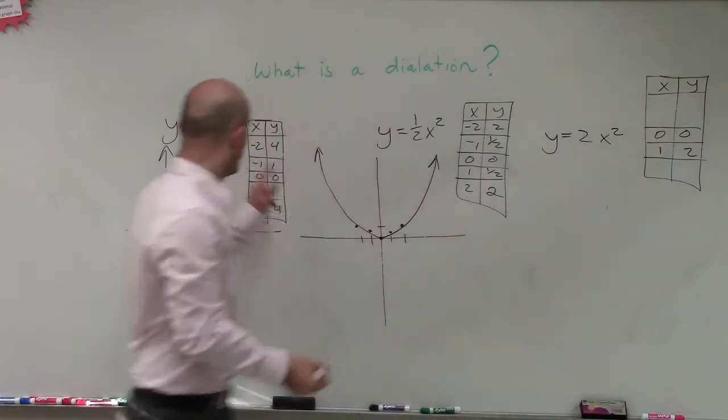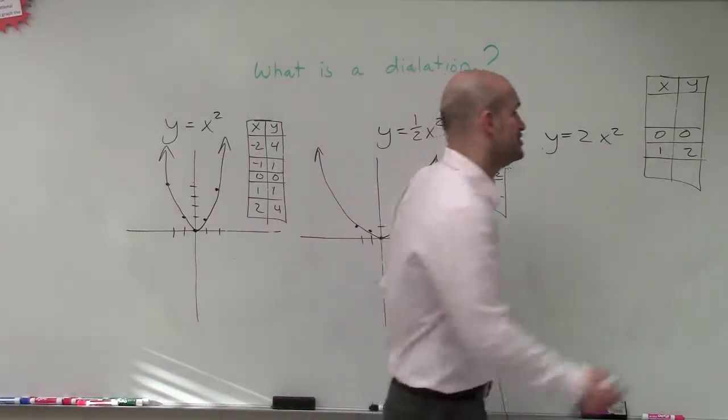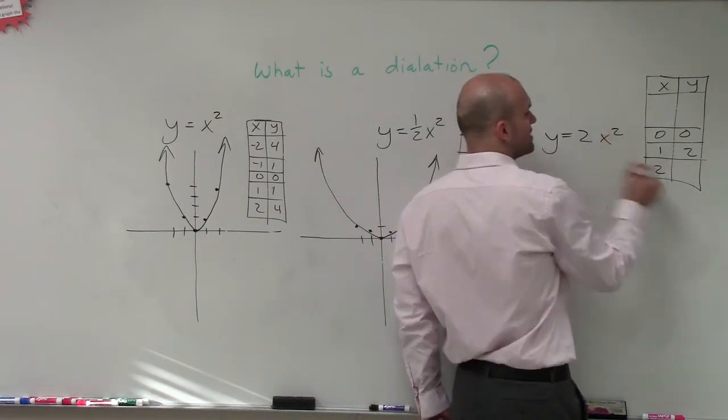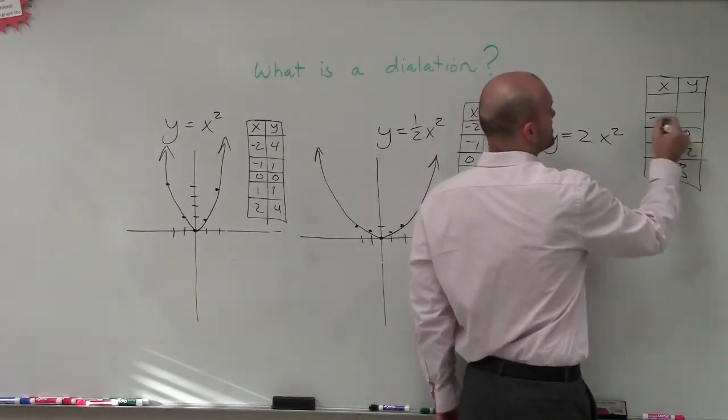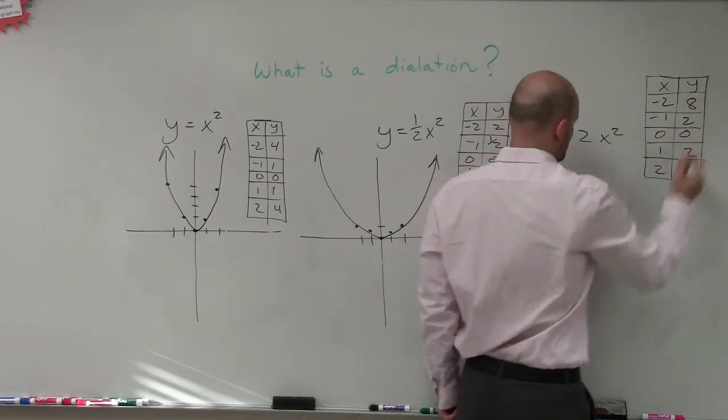So now instead of going over 1 or over 1 up 1, now I'm going to go over 1 up 2. And then over 2, 2 squared is 4. 4 times 2 is 8. And this is going to be the same way on the other side, by applying my axis of symmetry.